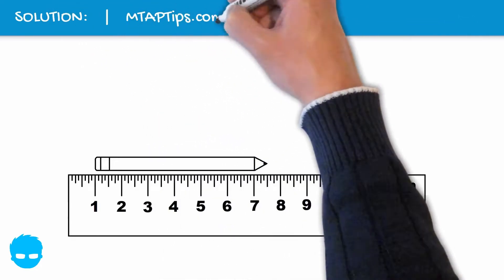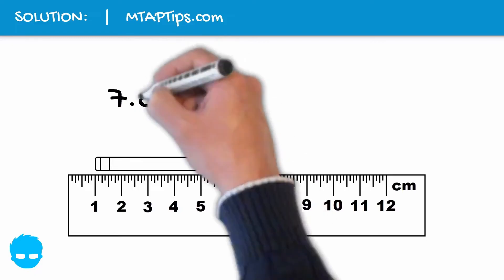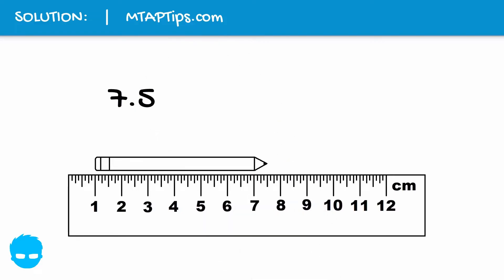At first glance, we might think that this pencil is 7.5 cm long because the tip of the pencil is located at that point of the ruler.